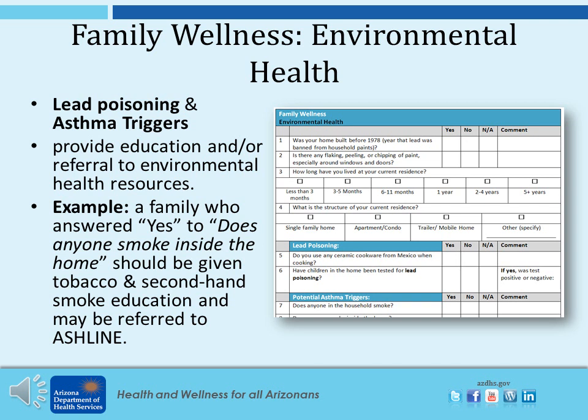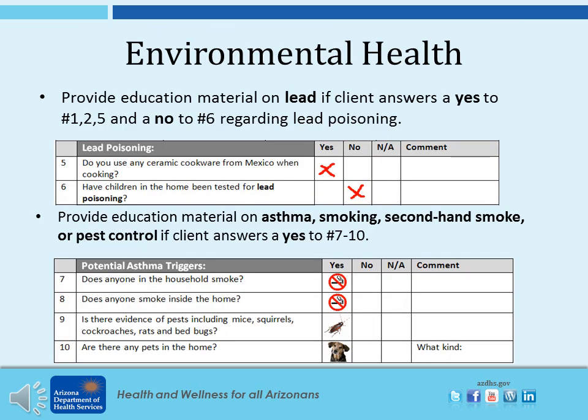The Environmental Health section of the assessment includes lead poisoning and asthma triggers as some of the topics. Please provide education or a referral to environmental health resources if a need is identified. For example, if a family answers yes to does anyone smoke inside the home, they should be given tobacco and secondhand smoke education, or may be referred to the Arizona Smokers Helpline. Under lead poisoning, please provide education material on lead if the client answers yes to numbers 1, 2, and 5, and no to number 6, as this puts the family at high risk for lead poisoning. Under potential asthma triggers, please provide education material on asthma, smoking, secondhand smoke, or pest control if the client answers yes to numbers 7 through 10.